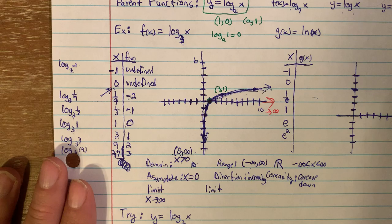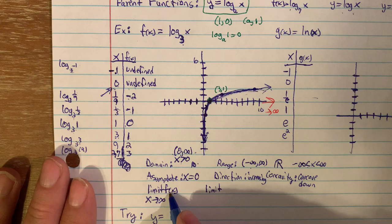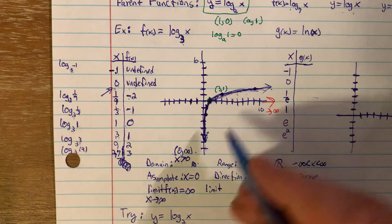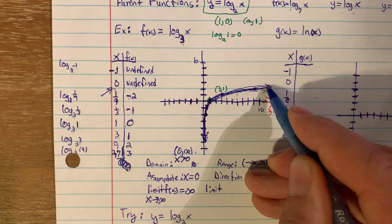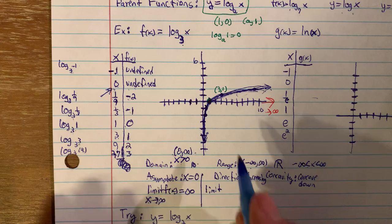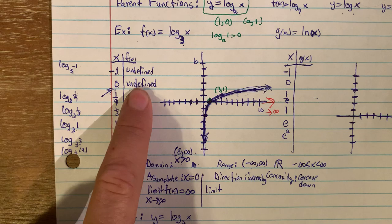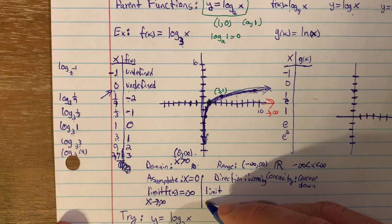Is there a limiting value for logarithms as x goes toward infinity? We write: the limit as x goes toward infinity of f(x). For logarithms, there is no limiting value — it just keeps going up toward infinity. So the limit as x goes toward infinity of f(x) equals infinity, meaning the y values keep going up and up with no ceiling.